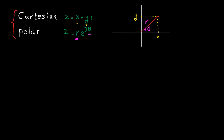Now let's see how we can go from Cartesian to polar form. As you may remember, for a right triangle, which means one angle is 90 degrees, we have this famous formula: a squared plus b squared is equal to c squared.